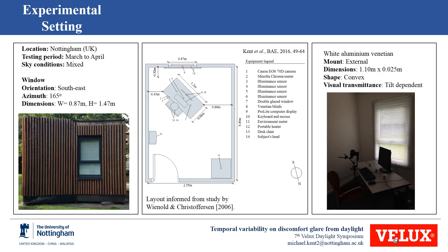To test the hypothesis of a time-of-day effect, an experiment was designed in a test room with direct access to daylight. The test took place in Nottingham from March to April under mixed sky conditions. Inside the test room was a workstation equipped with a desk, a chair, and a visual display unit — an LCD screen — used to display visual tasks. The desk was arranged diagonally to prevent unwanted head movements between the window and the visual task screen.